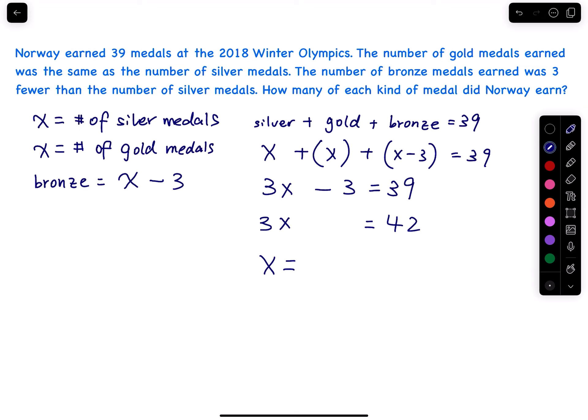42 divided by 3, and then that equals 14. So that equals 14 silver medals and then also 14 gold medals.